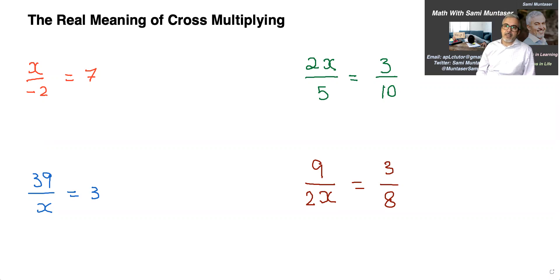Cross multiplying means if anything wants to cross to the other side of the equal sign, if it's on the bottom it goes to the top, if it's on the denominator it goes to the numerator and if it's on the numerator it goes to the denominator when it crosses the equal sign. So if you're on top and you want to cross the equal sign you go to the bottom. If you're on the bottom and you want to cross the equal sign you go to the top.